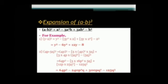Now, expansion of (a - b)³. The formula remains the same as for (a + b)³, but as there is a minus sign, the signs alternate: plus, minus, plus, minus. That is, (a - b)³ = a³ - 3a²b + 3ab² - b³.